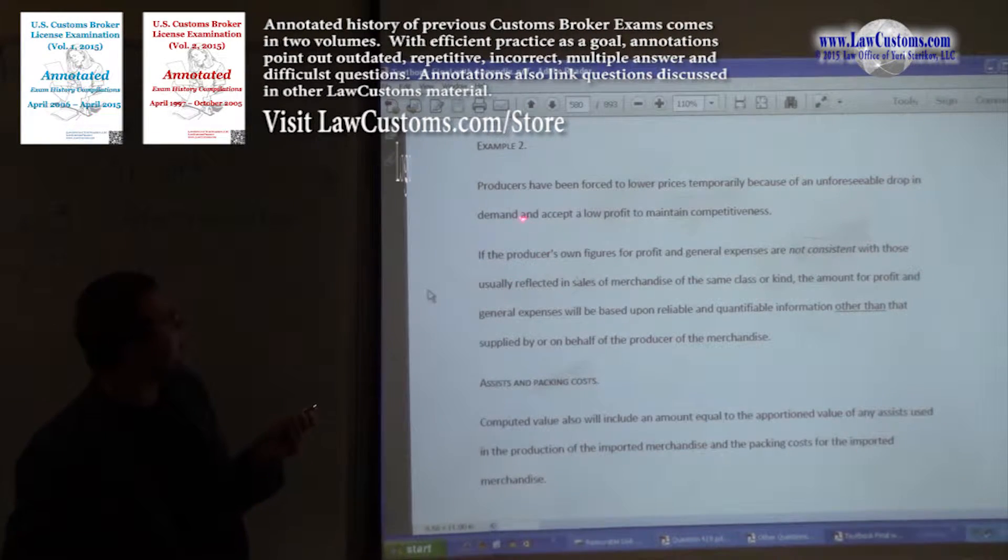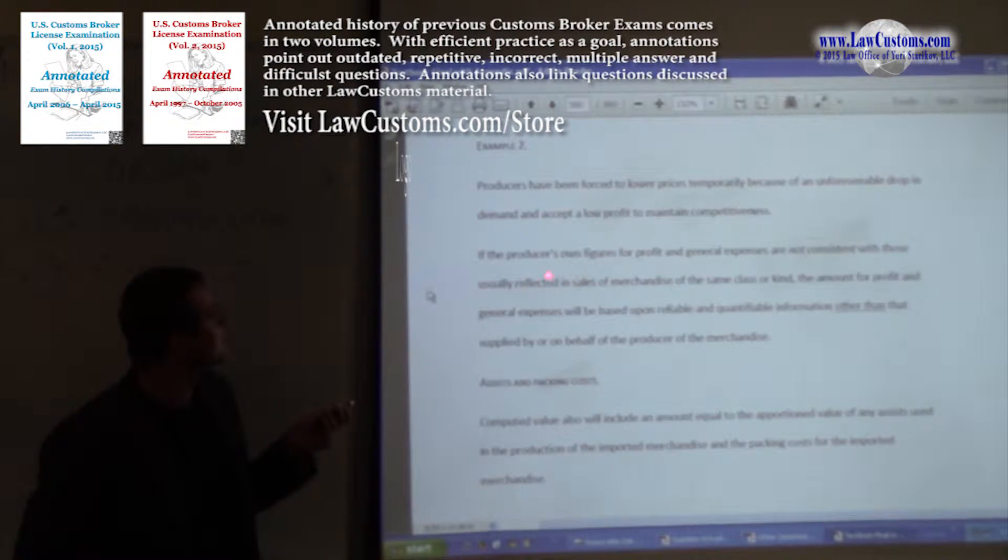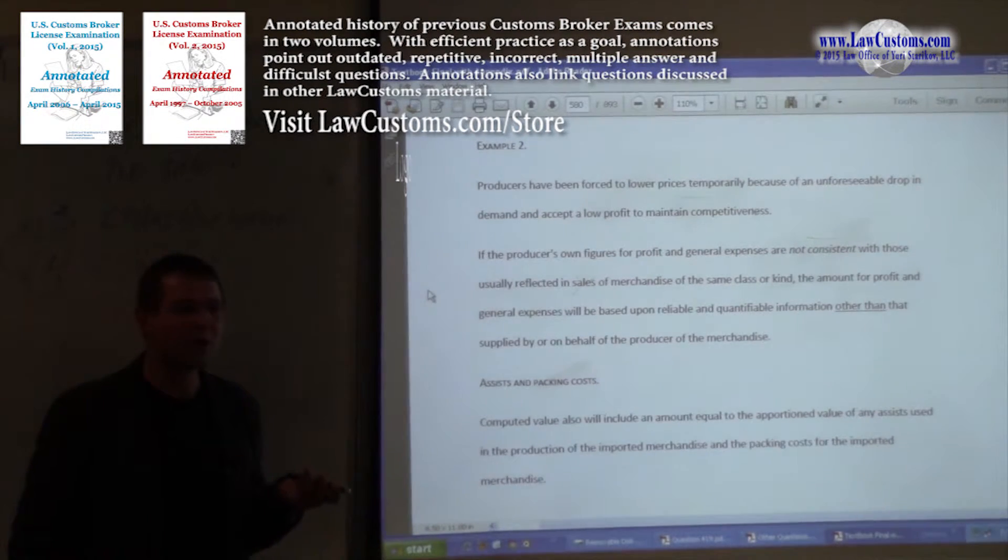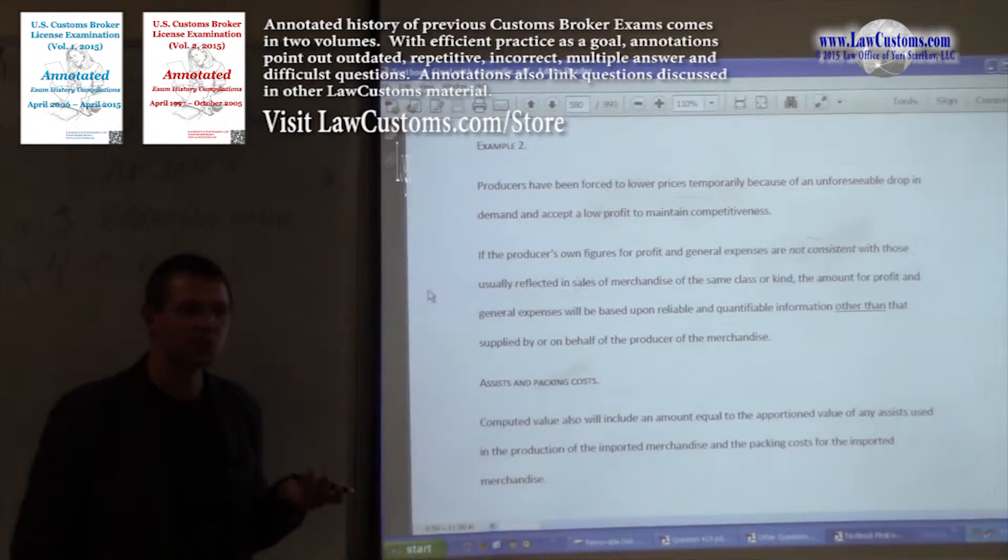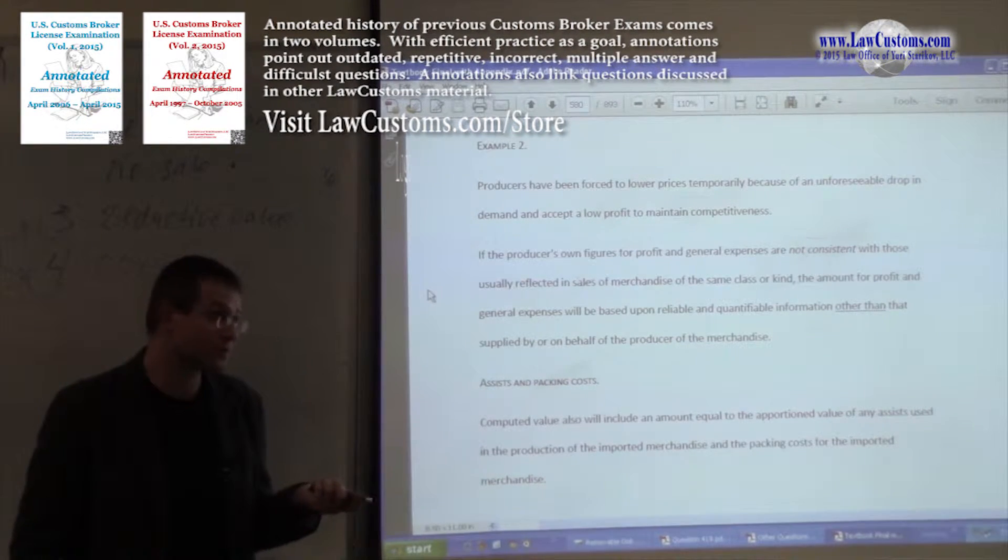If the producer can demonstrate that there is a low profit of sales of imported merchandise because of emphasis peculiar commercial circumstances, this is fine. The profit figures will be accepted. So if there is no profit, then no profit figures will be accepted. But you must produce valid commercial reasons. You have to have commercial reasons to justify. And valid means they have to be legal. They cannot violate, for example, the anti-trust laws of the United States. Producers have been forced to lower prices temporarily because of the drop of demand.